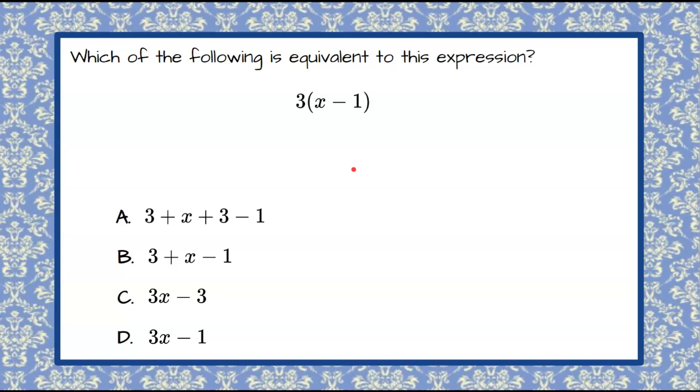Welcome back. So we have our product here 3 multiplied by this parentheses quantity x minus 1. We're going to use the distributive property to clear our parentheses and write this in simplest form.